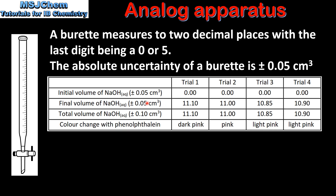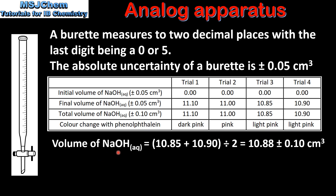Because the burette is read twice — once for the initial and once for the final volumes — we add these uncertainties together to get the uncertainty for the total volume. In this acid-base titration four trials were conducted and the total volume of sodium hydroxide was calculated for each trial. The color change with phenolphthalein indicator was also recorded. To calculate the average volume of sodium hydroxide, the values from trial 3 and trial 4 were used, as they produced the lightest pink color change. Adding the two values and dividing by 2 gives us 10.88 plus or minus 0.10 centimeters cubed.